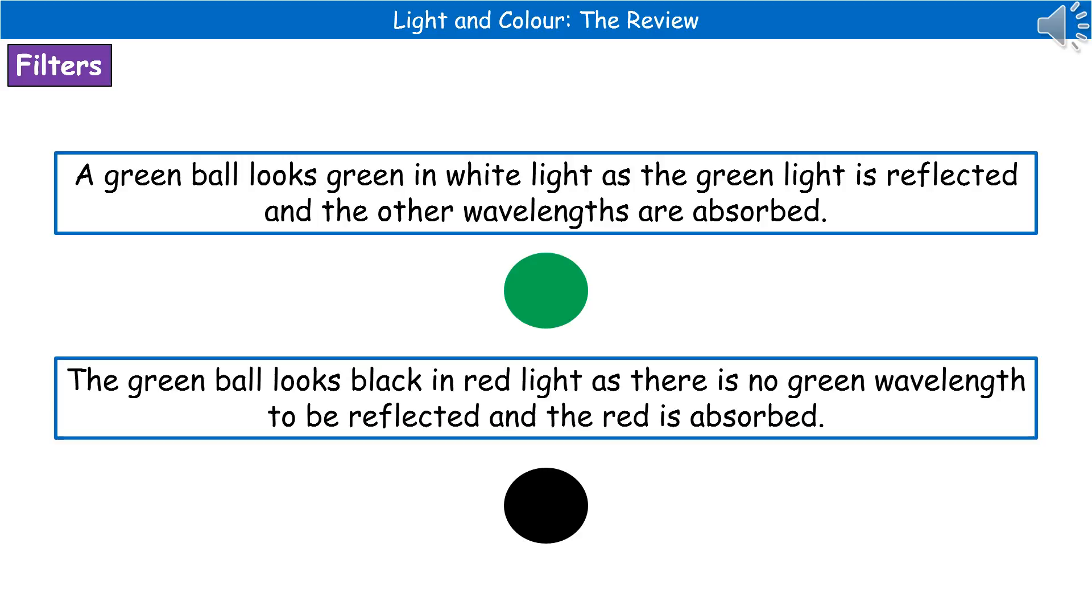If we have our same green ball, but we shine a red light on it, then that ball will look black. Because what happens is, with the red light, we don't have any wavelengths that could be reflected.